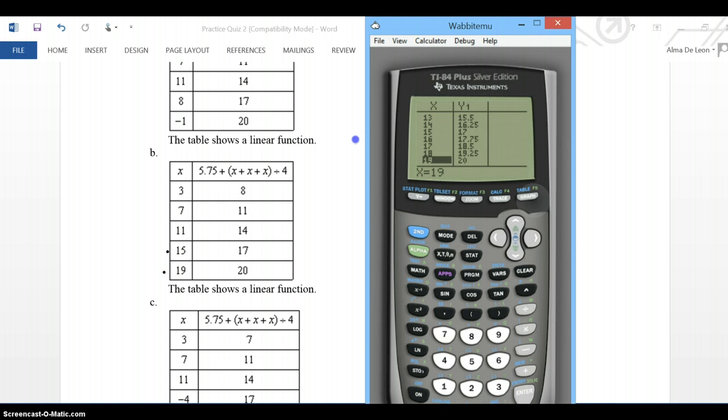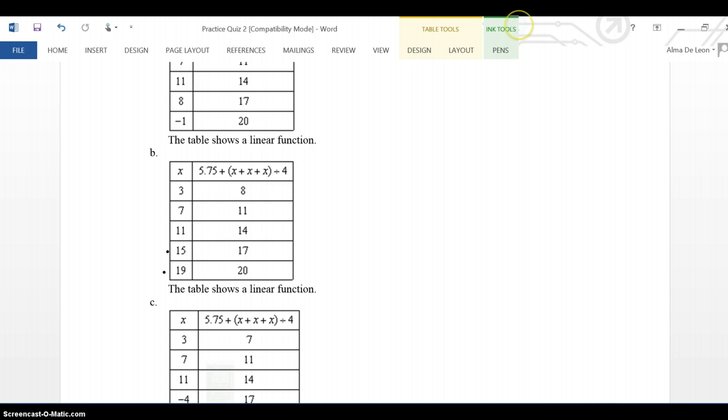And if I click graph, I see that my graph is a line, so this is a linear relationship. This does show a linear function. So the answer is B.